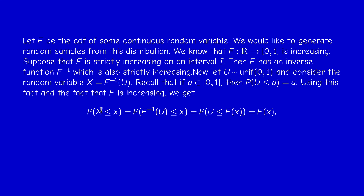The probability that capital X = F⁻¹(U) is less than or equal to x equals the probability that F⁻¹(U) ≤ x. Since capital F is strictly increasing, this event is equivalent to the event U ≤ F(x). Since F(x) is between zero and one and U is uniform, this probability is just capital F of x. So we have proved that X = F⁻¹(U) has CDF capital F.